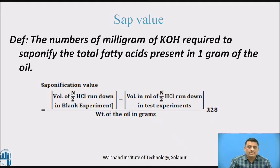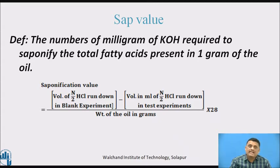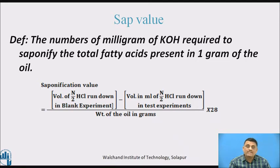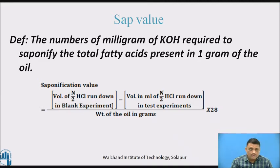The definition of saponification value: the number of milligrams of KOH required to saponify the total fatty acids present in one gram of the oil. The difference is that in acid value we determine mineral acids, whereas in saponification value we determine fatty acids. In saponification, we treat the sample with KOH alkali solution where fatty acids convert into soap, and the KOH consumed gives knowledge about the total fatty acids present. Therefore, saponification value = (volume of N/2 HCl in blank experiment − volume of N/2 HCl in test experiment) ÷ (weight of oil in grams) × 28.